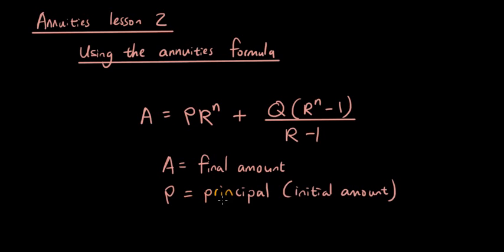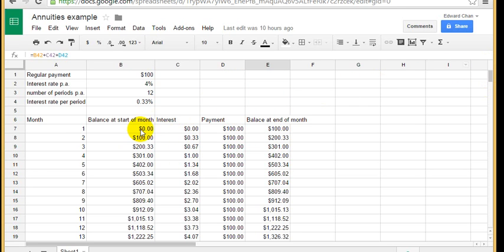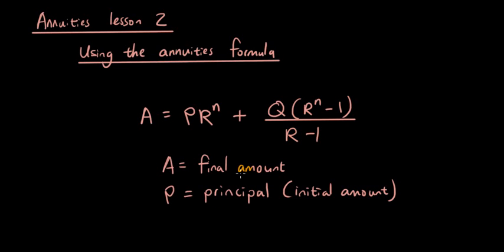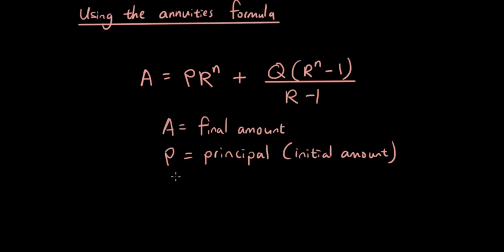P stands for principal which is your initial amount and in our bank account that we did in the last example our principal was actually zero. Because in the first month we had zero dollars in our bank but we can change that later on if we wanted to. So P is the principal, how much money you have in the beginning.